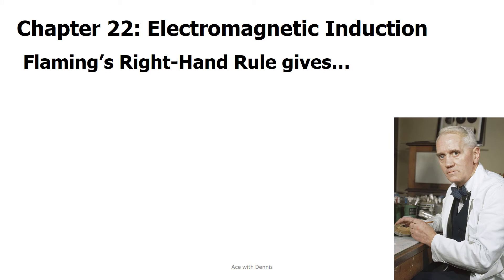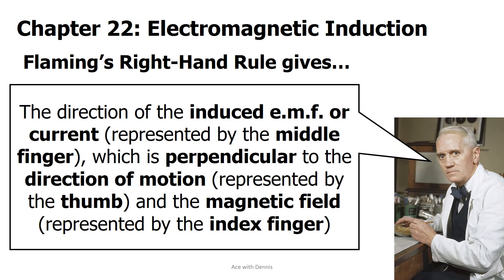Fleming's right hand rule gives the direction of the induced electromagnetic force, or current, represented by the middle finger, which is perpendicular to the direction of motion represented by the thumb, and the magnetic field represented by the index finger.